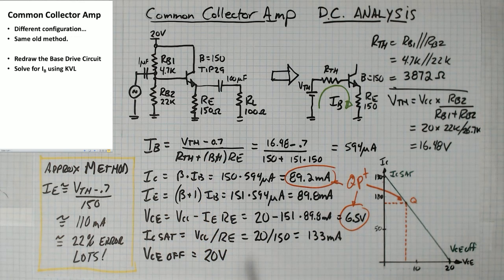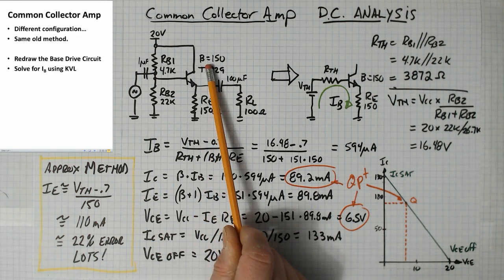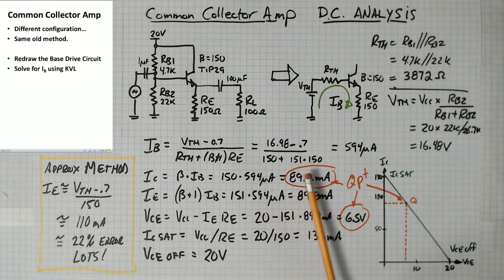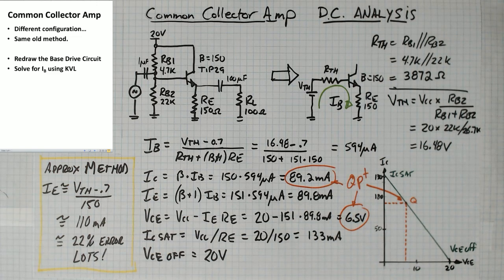You could probably drop the plus 1 because beta is fairly large at 150 and it won't make much difference. You put in your known values. You come up with a base current 594 microamps.